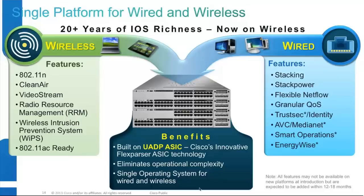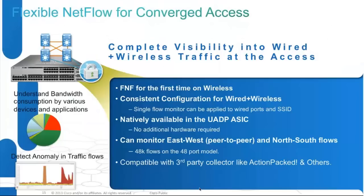When we merge wired and wireless together on a 3850, it eliminates operational complexity. You now have only a single point to manage both wired and wireless at the access layer. The beauty is that with 3850 you get a single IOS for both wired and wireless, so when you're upgrading IOS, you're actually upgrading both services together.